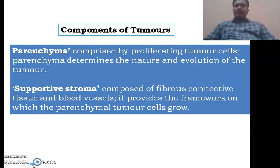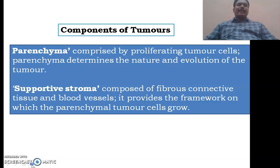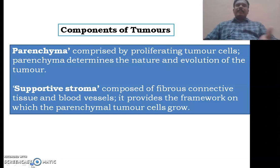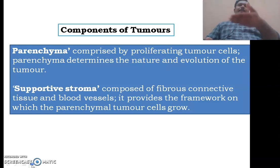Components of tumors: not only tumors, but whatever tissue is in our body comprises two components — one is parenchyma and the second one is supportive stroma. Parenchyma is nothing but whatever cells are present in the tissue, which are considered parenchymal cells. Supportive stroma is the framework — the basement membrane material on which these cells build up layer by layer.